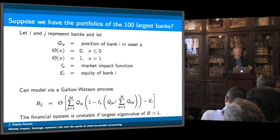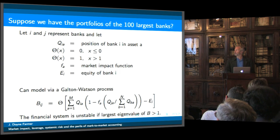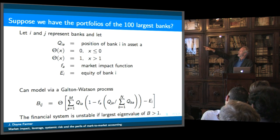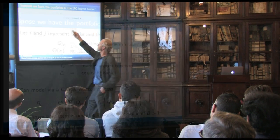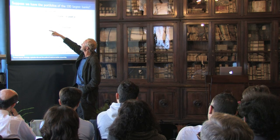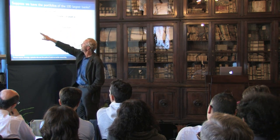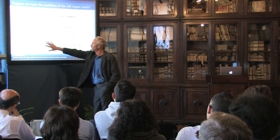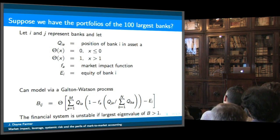Suppose we had the portfolios of the 100 largest banks — the Fed just hands it to us. Let I and J represent banks, let Q_{IA} be the position of bank I in asset A, let this theta function be 0 if X is negative and 1 if positive, let F_A be a market impact function, and let E_I be the equity. Then you can write down a formula that describes a matrix giving the probability that bank I fails given that bank J failed.